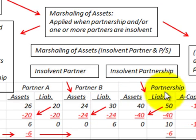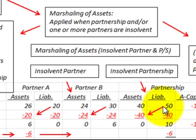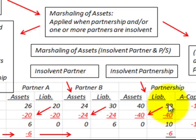For the partnership itself, they have assets of $40,000 and liabilities of $50,000. Their assets are less than their liabilities, so the partnership is also insolvent.